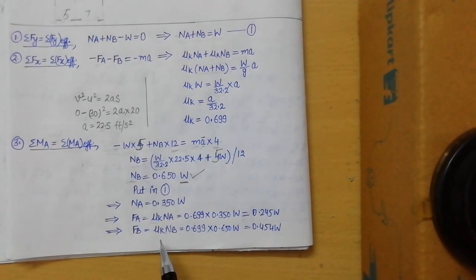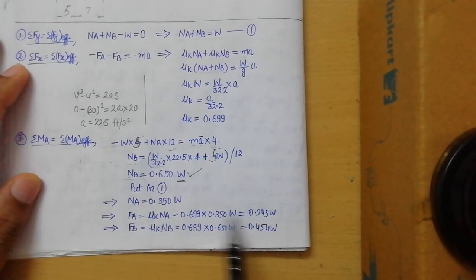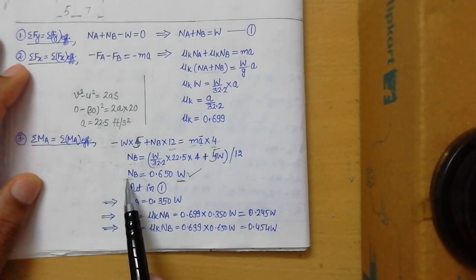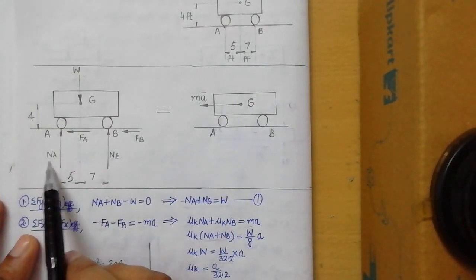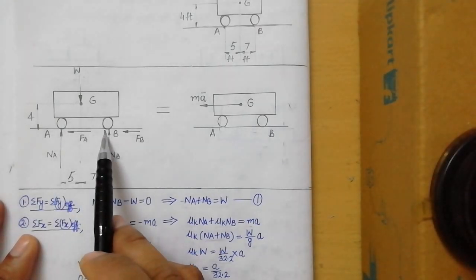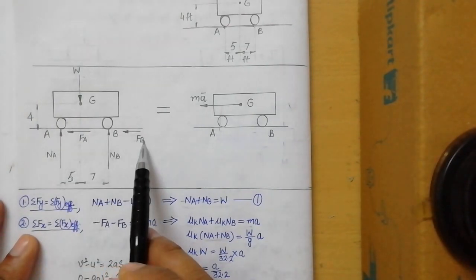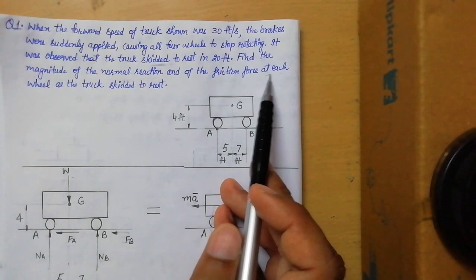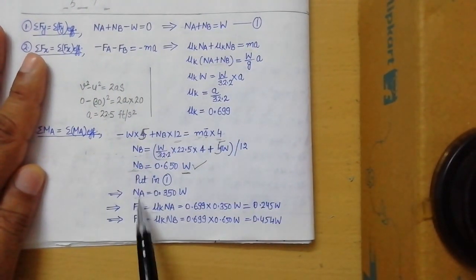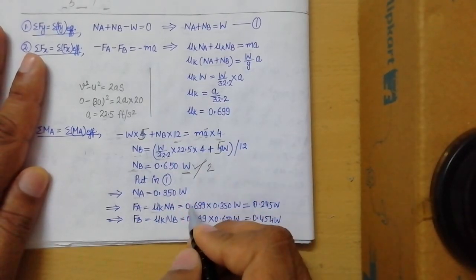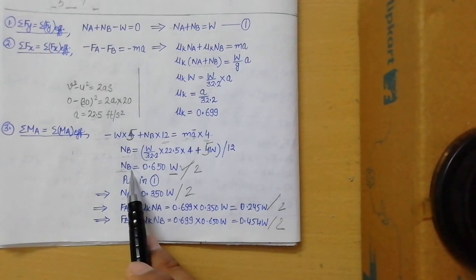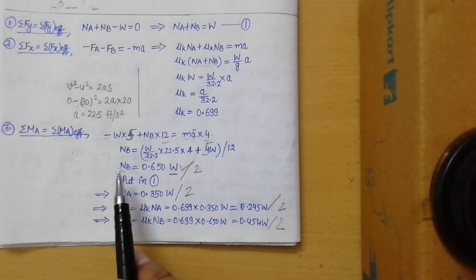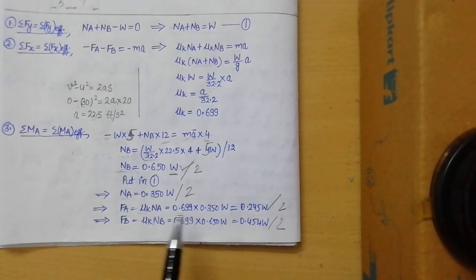One important note: NA is the reaction for both rear wheels combined, NB is for both front wheels combined, and similarly FA and FB are for both rear and front wheels respectively. However, the question asks for forces at each wheel. Therefore, divide each of the values NA, NB, FA, and FB by 2 to get the values at each individual wheel. That gives us our final answers. I hope this problem is clear to you. Thank you very much.